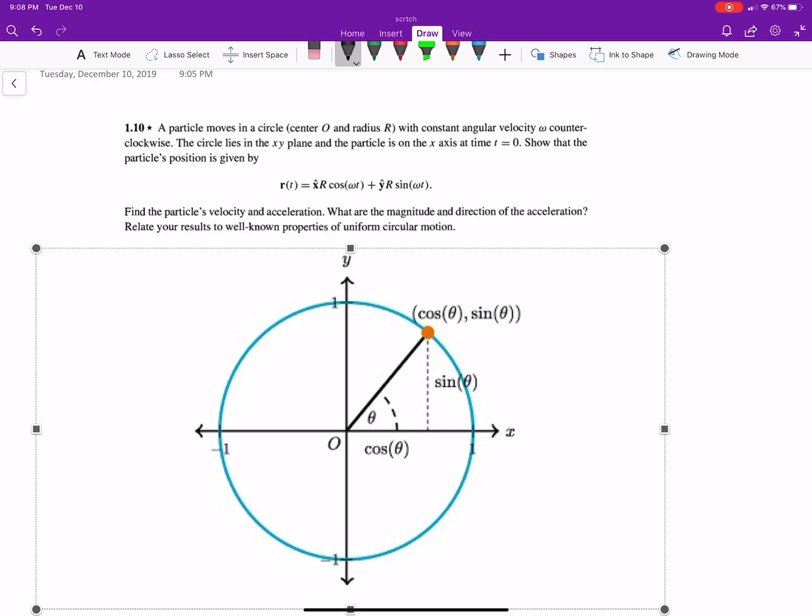Show that the particle's position is given by the given equation, and then it wants us to find the acceleration, the velocity, the magnitude and all that good stuff. So I have this picture here of the unit circle, actually, but it'll be helpful with a radius r, and it's moving counterclockwise with some angular velocity.